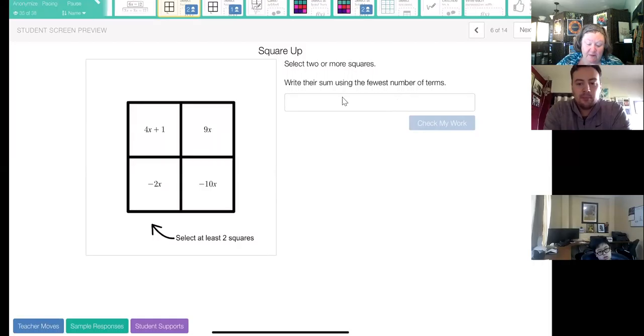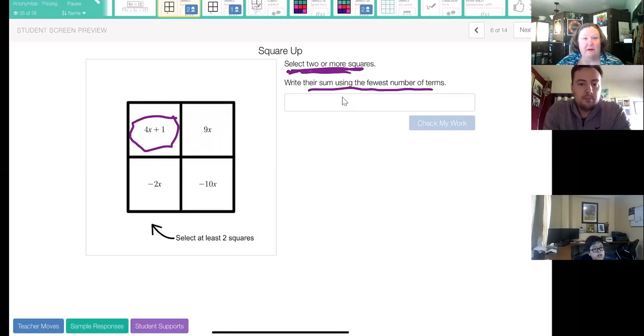So the directions here was to select two or more squares, and then write their sum using the fewest number of terms. And let's take 4x plus 1, it's probably the most complex of the four squares available here.